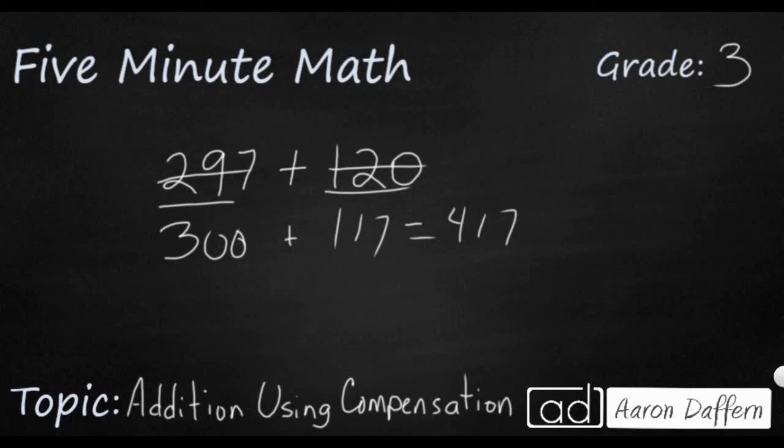Or if you wanted to, you could have done something different. You could have said your 120, even though it's not really close, you could have taken 80 away from the 297 and turned it into 217. Because now your 120 would be 200. And guess what? You still get the same answer. 417.